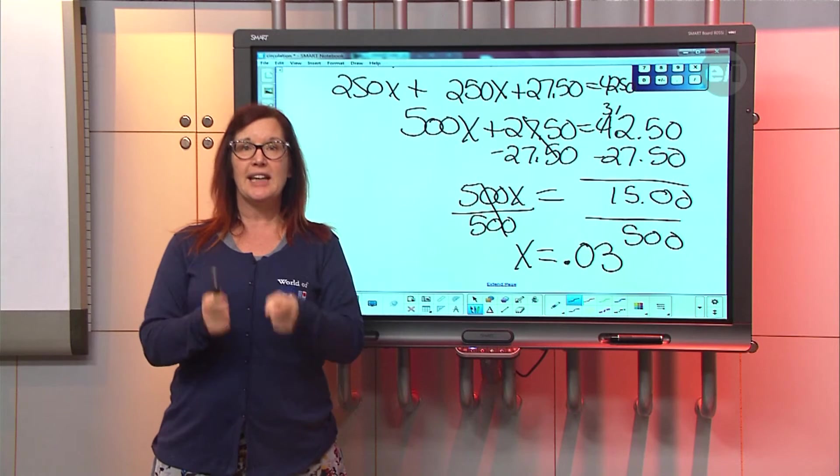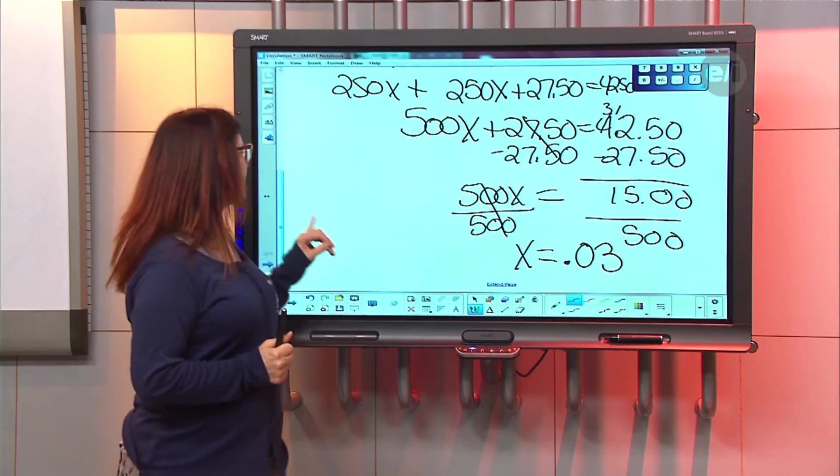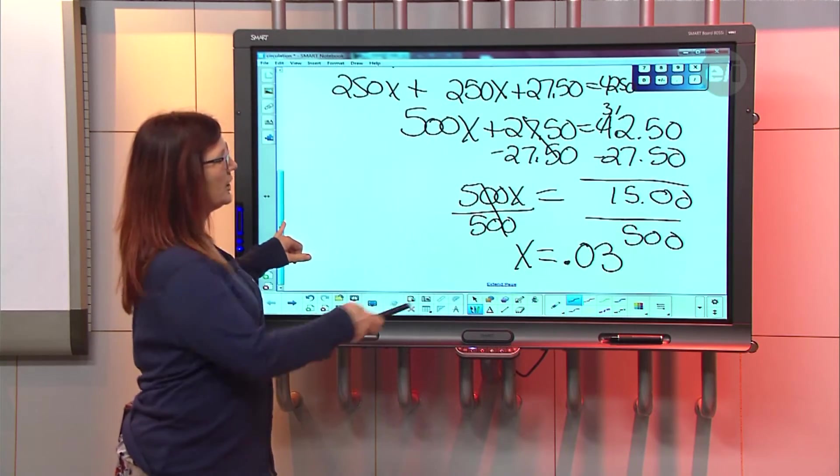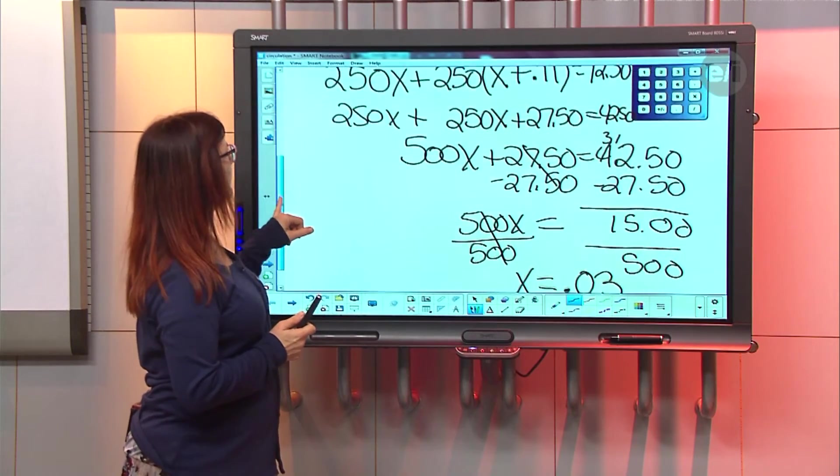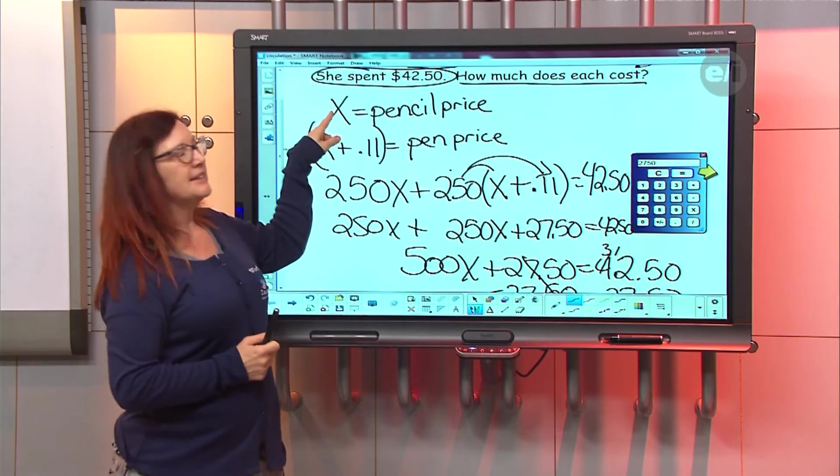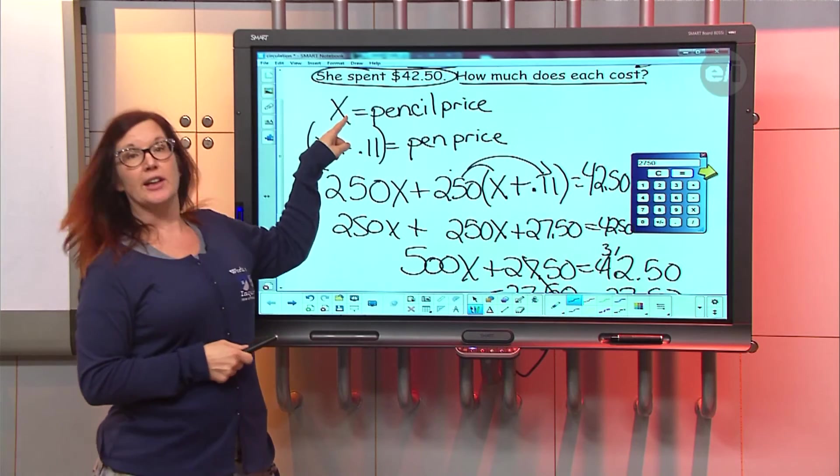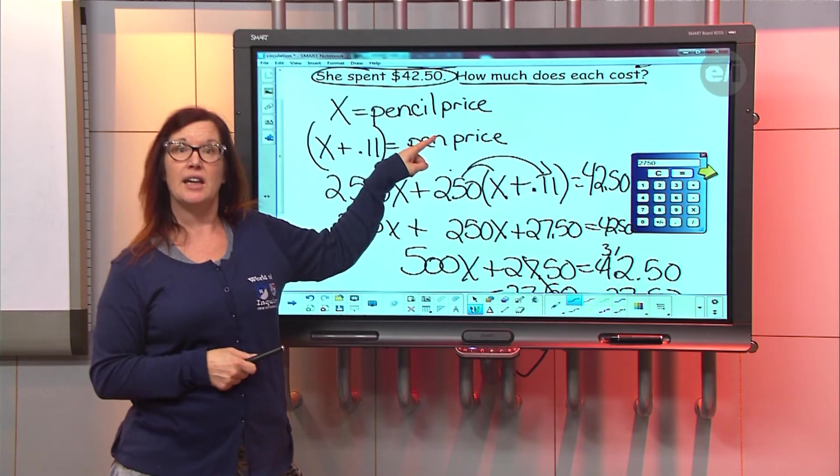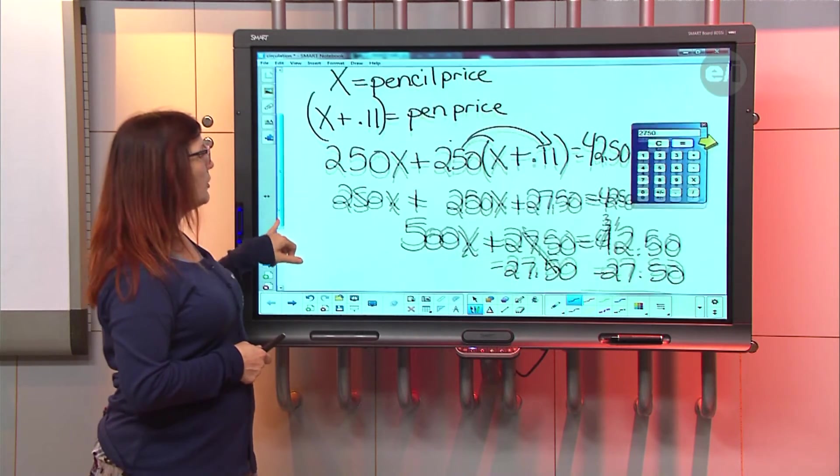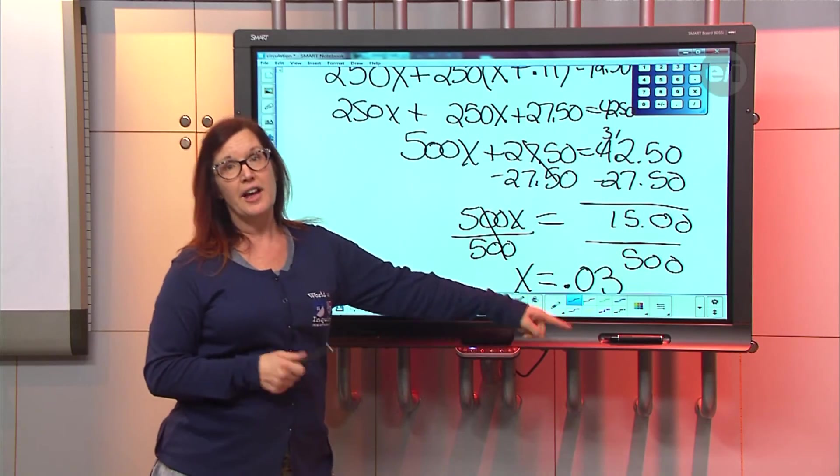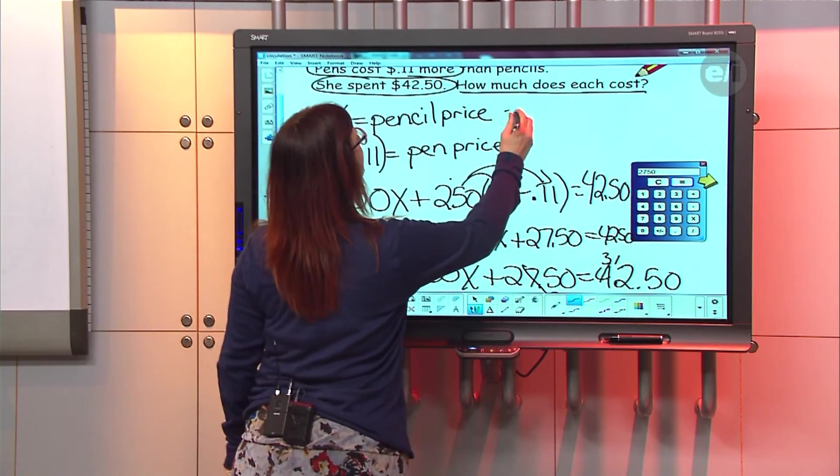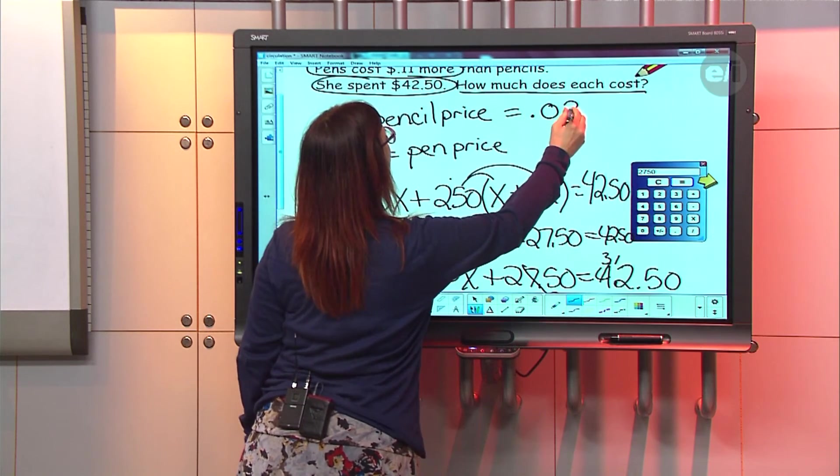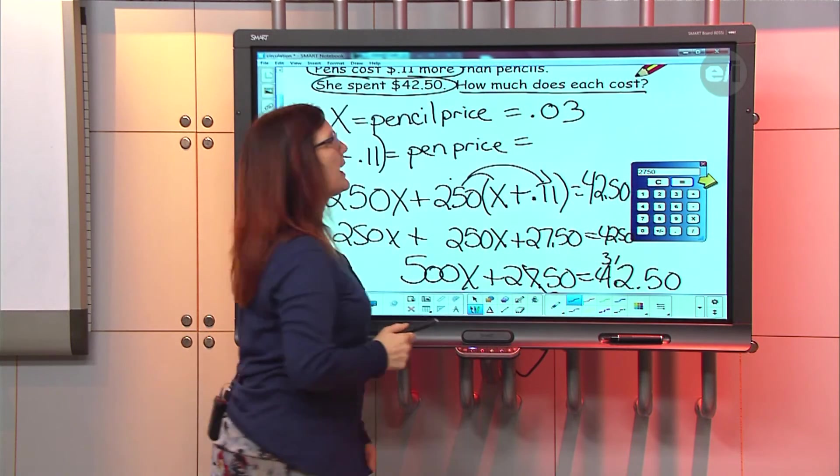So it says X equals 0.03. So what does that mean, X equals 0.03? What does that mean in terms of the story? What do we say X stood for? If I go back up here, what's X stand for? It stands for the price of the pencil, right? Yeah. So 0.03 must be the price of the pencil.